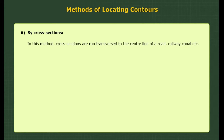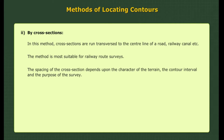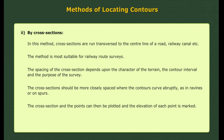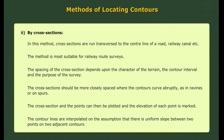2. By cross sections. In this method, cross sections are run transverse to the centre line of a road, railway, canal, etc. The method is most suitable for railway route surveys. The spacing of the cross sections depends upon the character of the terrain, the contour interval, and the purpose of the survey. Cross sections should be more closely spaced where contours curve abruptly, as in ravines or on spurs. The elevation of each point is marked and contour lines are interpolated on the assumption that there is uniform slope between two points on two adjacent contours.